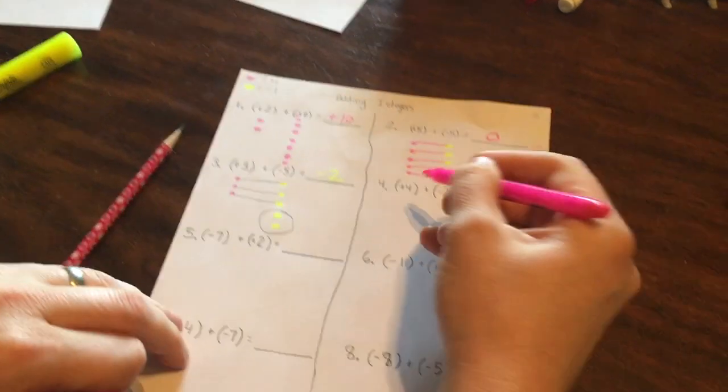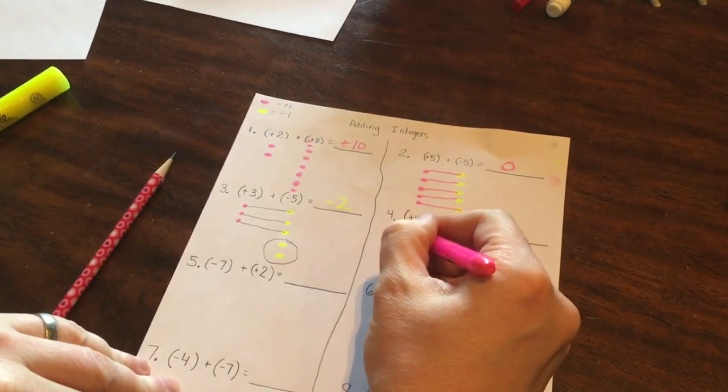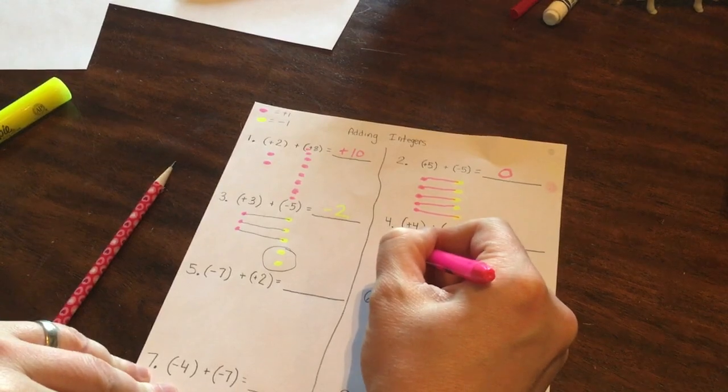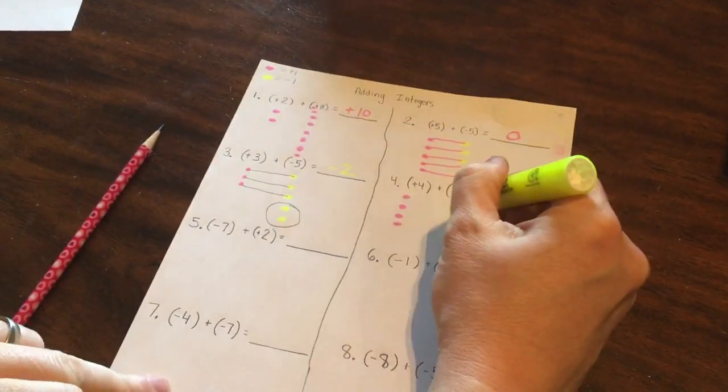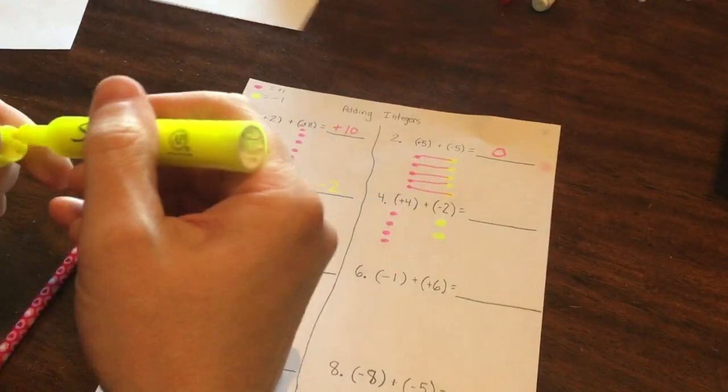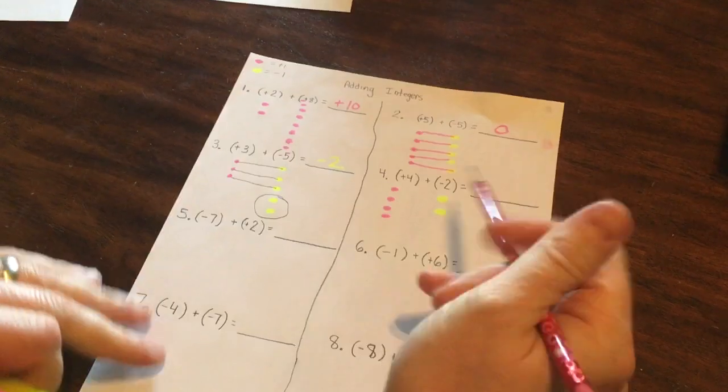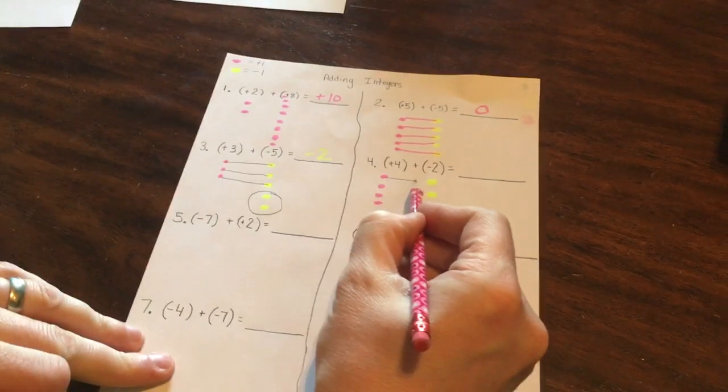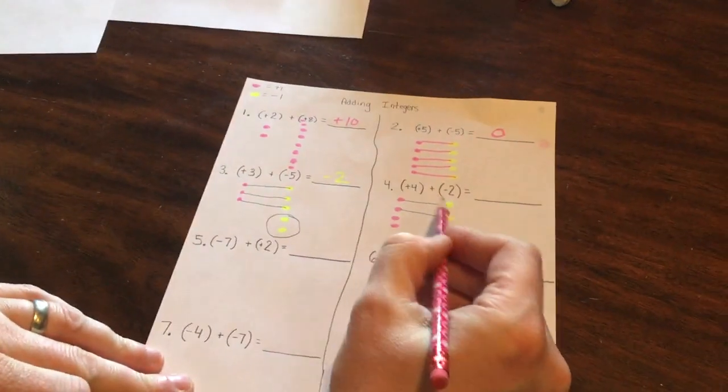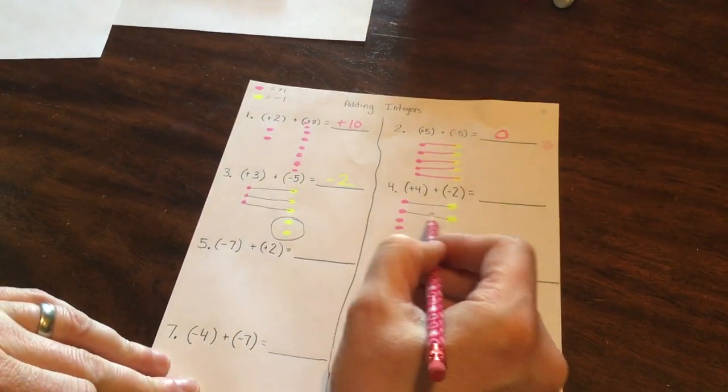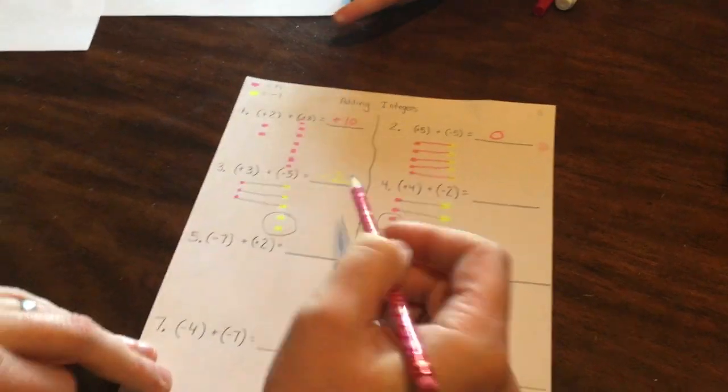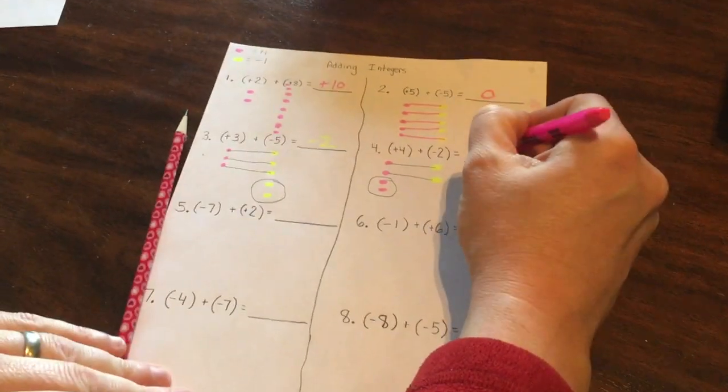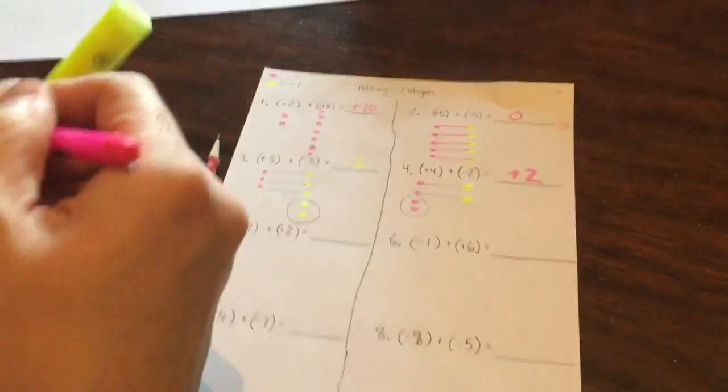So here's positive four and negative two. What do we look for now? The zero pairs. We match them up. This means zero. This means zero. And with two left over, I have two pinks. Two positives.